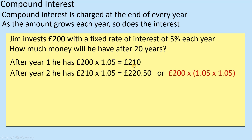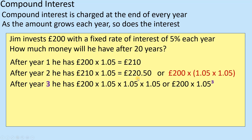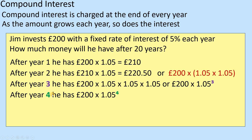After year two, you repeat the process, but he now has £210 in his bank, so he does times 1.05 again, which gives £220.50. So you've timesed it by 1.05 twice. After year three, you times the original amount by 1.05 three times — that's 200 times 1.05 cubed. After year four, I'm doing 200 times 1.05 to the power of four, and so on.